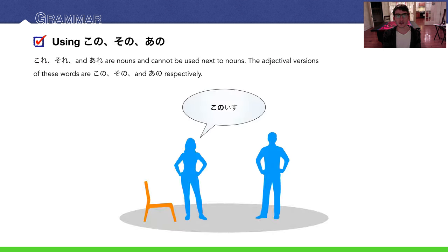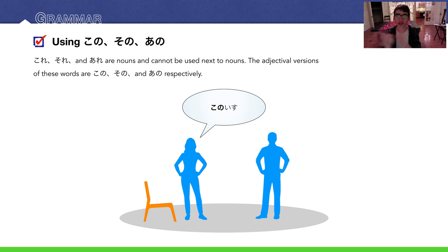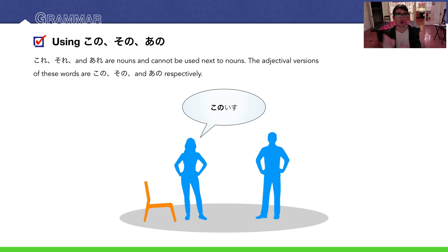Moving on, let's talk about three very useful and important words: kono, sono, and ano. You learned kore, sore, and are already — those are nouns and you cannot put them next to another noun to make something like 'this pen' or 'that chair.' To do that, you need kono, sono, and ano — the adjectival versions of kore, sore, and are.